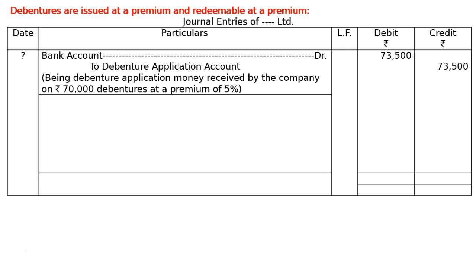The narration: bank debenture application money received by the company on Rs. 70,000 debenture at a premium of 5%. In the debit: 73,500; in the credit: 73,500.